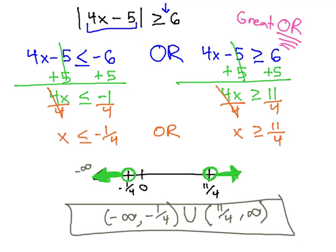This tells us that any values we pick that are smaller than negative 1 fourth, or larger than positive 11 fourths, and plug them into this inequality, we will end up with an absolute value that is greater than or equal to 6.